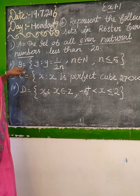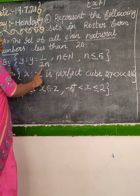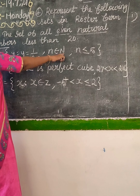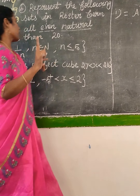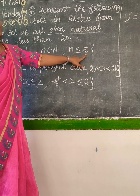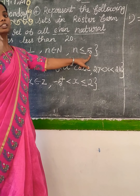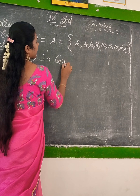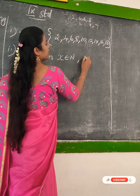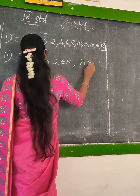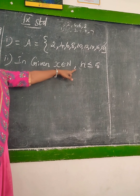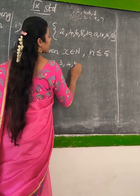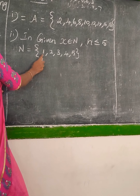Find the second answer. B equal to Y such that Y equal to 1 by 2N. Y belongs to natural number. N less than or equal to 5. So you take N equal to 1, 2, 3, 4, 5. This is the natural number values. N less than or equal to 5 is the limit. These are the small N values.